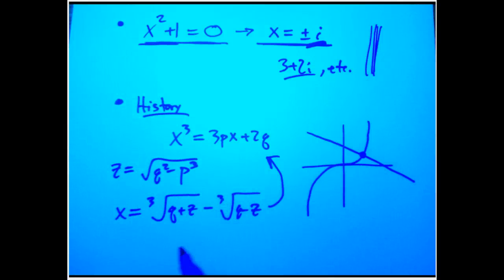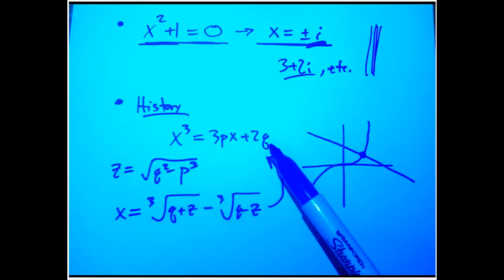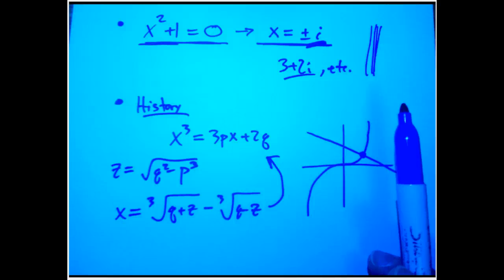And the cool thing is if you proceed with that and you proceed to think that this might make some sense and obey the usual rules of algebra, then this actually does give you a real number. And it's a real number that solves this equation. This is a very cool fact, and it is the historical origin of complex numbers.